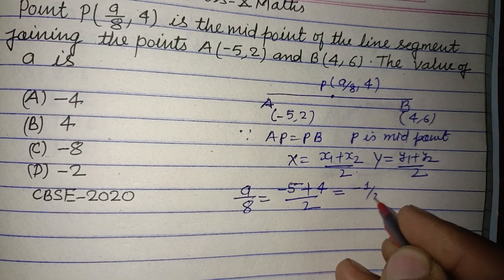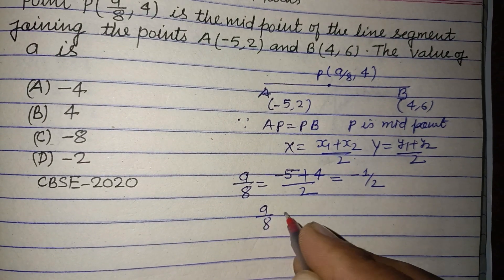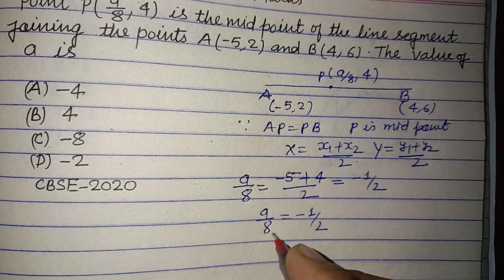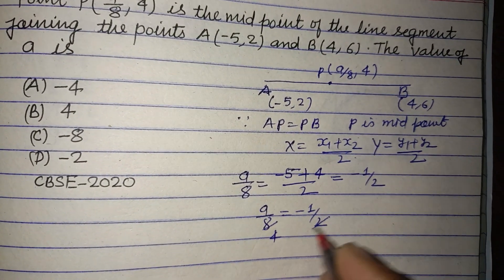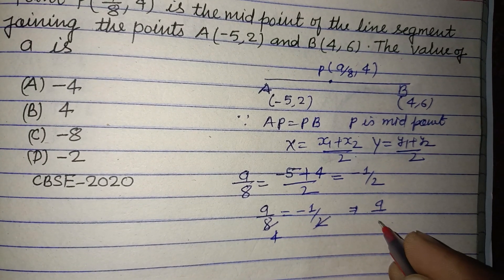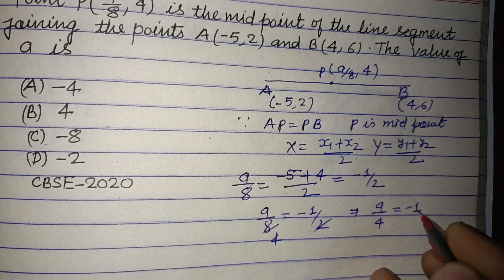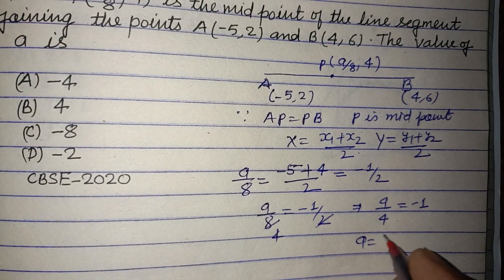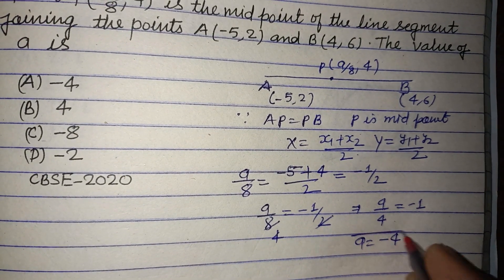So this is -1/2. So a/8 equals -1/2. So 2 goes to 8. Therefore a/4 equals -1, or a equals cross multiplication which gives -4.